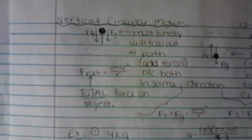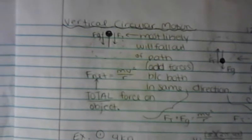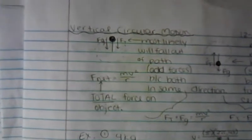One of the lessons in unit 3 is vertical circular motion. The main formula for this is force net equals mass times velocity squared over radius. Force net means the total forces on an object.